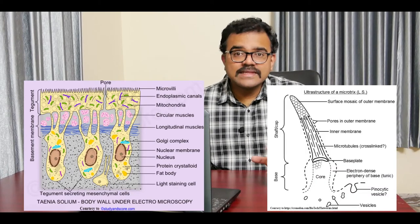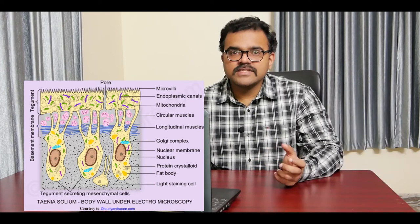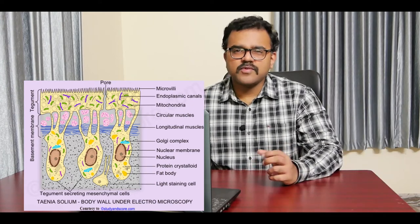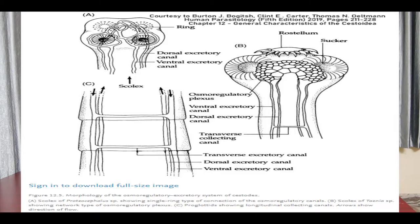The microtriches greatly increase the surface area. The tegument affords protection and probably helps in attaching the parasite to the intestinal wall of its host. The excretory system consists of flame cells, tubules, and four longitudinal collecting ducts — two dorsal and two ventral.